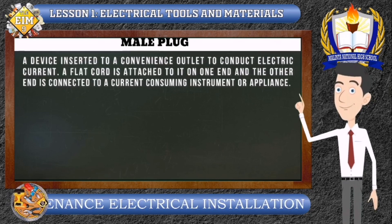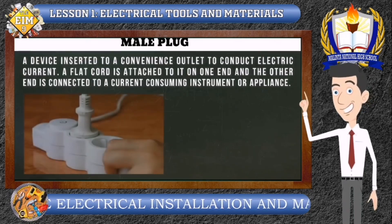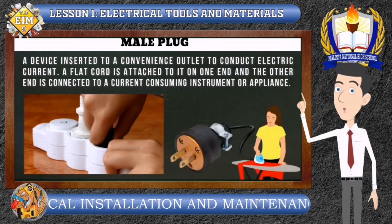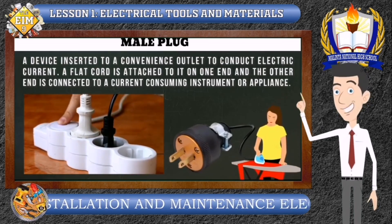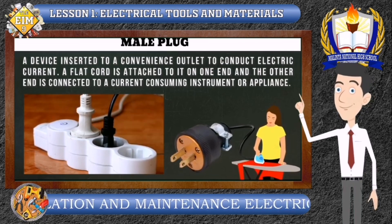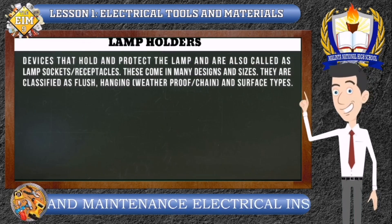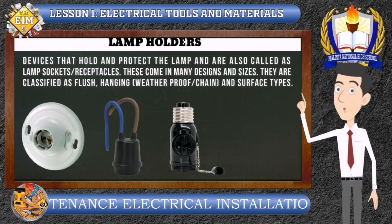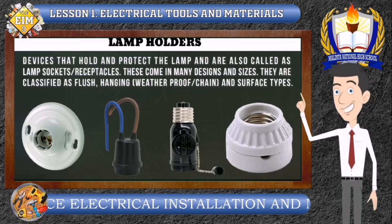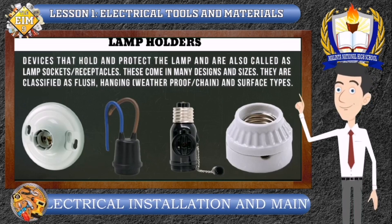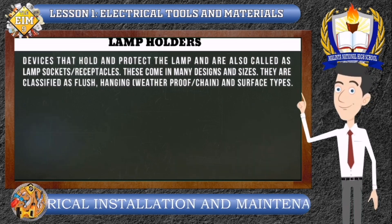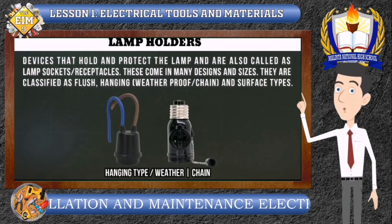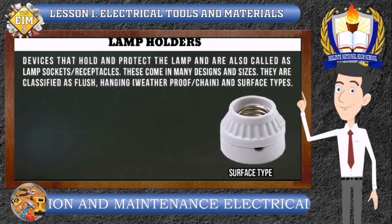Male Plug. A male plug is a device inserted into a convenience outlet to conduct electric current. A flat cord is attached to it on one end and the other end is connected to a current-consuming instrument or appliance. Lamp Holders. Lamp holders are devices that hold and protect the lamp and are also called lamp sockets or receptacles. These come in many designs and sizes and are classified as flush type, hanging, and surface type.